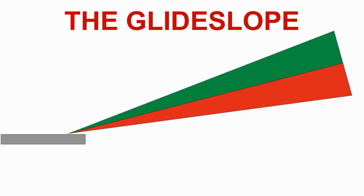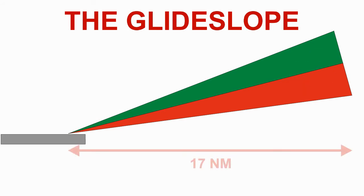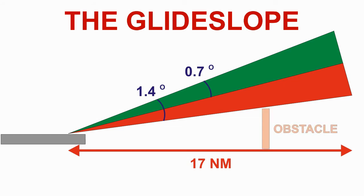Like the localizer beam, a vertical beam is transmitted from an antenna near the runway, which projects the beam upwards at the required angle. This beam is also split into two sections: the upper section is modulated at 90 Hz, and the lower section is modulated at 150 Hz. However, the carrier wave frequency is different to the localizer carrier wave frequency, so there is no interference between the two. The safe range of a glide slope beam is 17 nautical miles. The whole beam is 1.4 degrees wide, with each section being 0.7 degrees wide. The bottom of the lower beam is designed to keep above any obstacles that may be on the final approach.